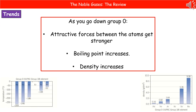The last thing we need to consider are some of the trends or patterns that we see as you go down group zero. Firstly, the attractive forces between the atoms get stronger the further down the group you go. Secondly, their boiling point increases. And finally, their density increases.